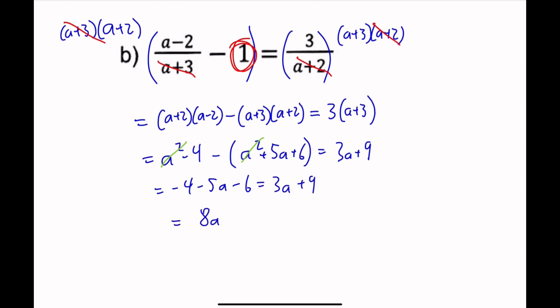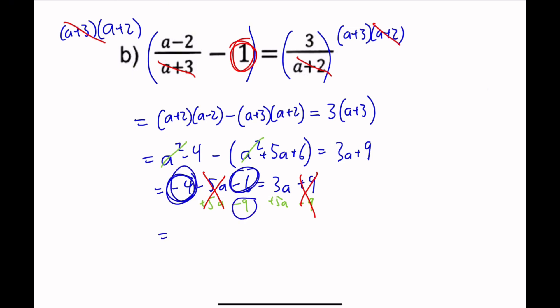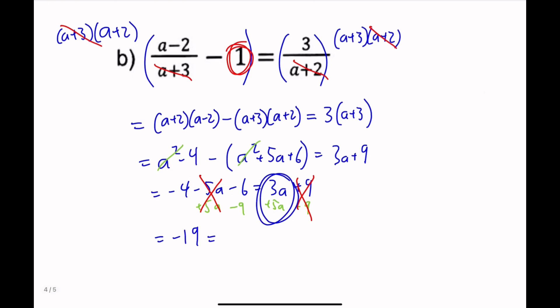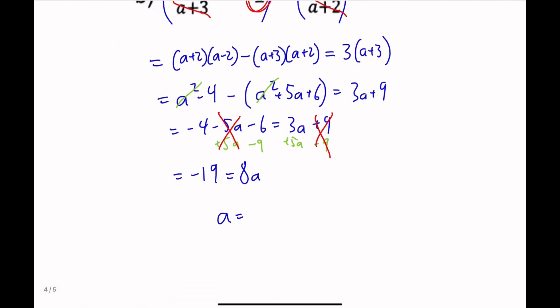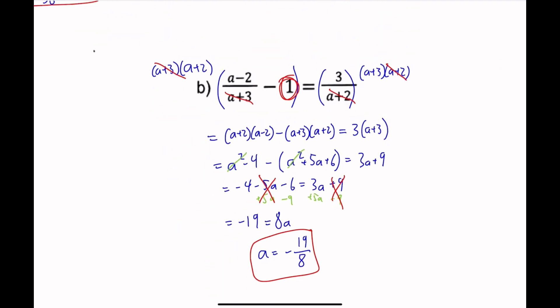Add 5a to both sides and subtract 9 from both sides. These terms cancel, giving us minus 4 minus 6 minus 9 equals 8a. That's minus 19 equals 8a, so a equals negative 19 over 8. And that's our answer.